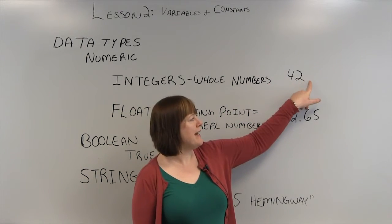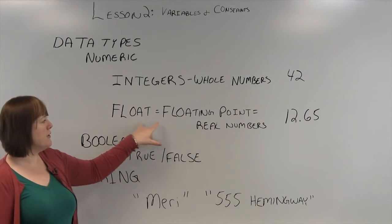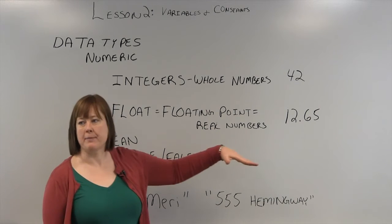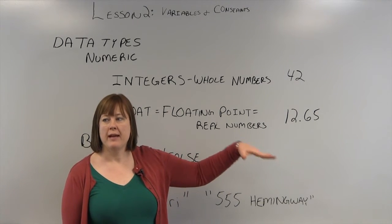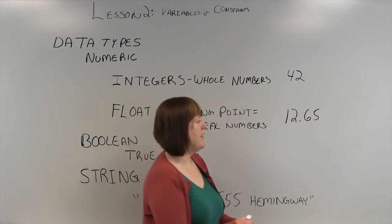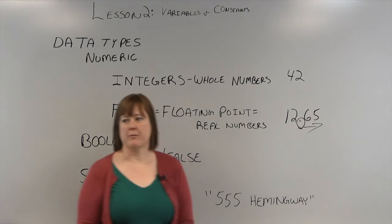An integer does not have a decimal point or any value after the decimal point. You can have a float, a floating point number or a real number. It's all the same thing. Depending on the language that you're working with is what it's going to be called. But a float basically means that it has a decimal point and numbers after the decimal point.